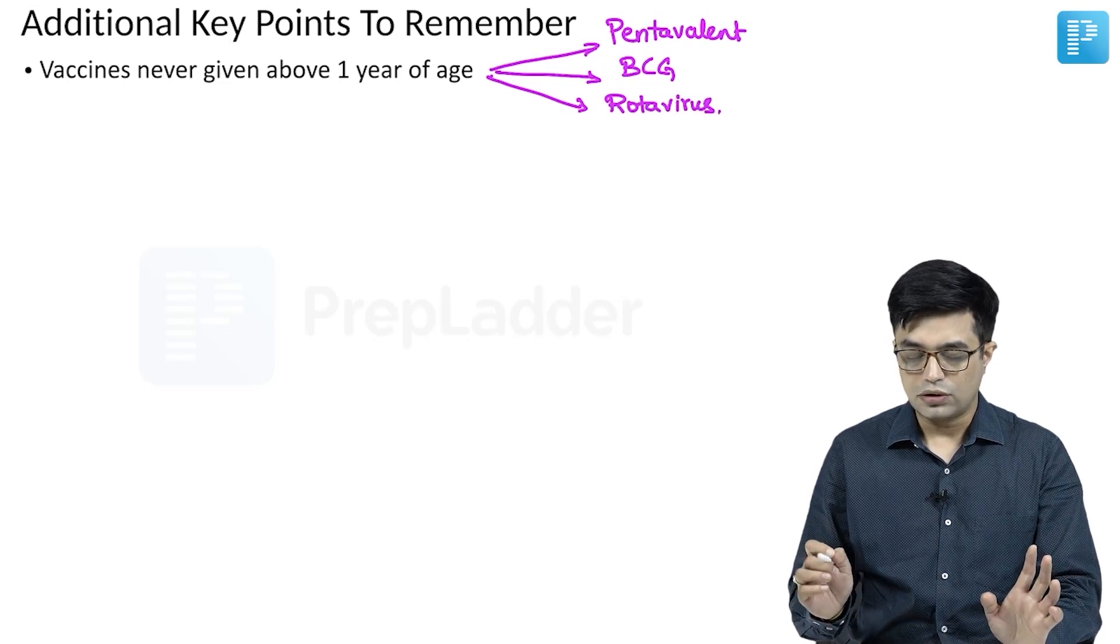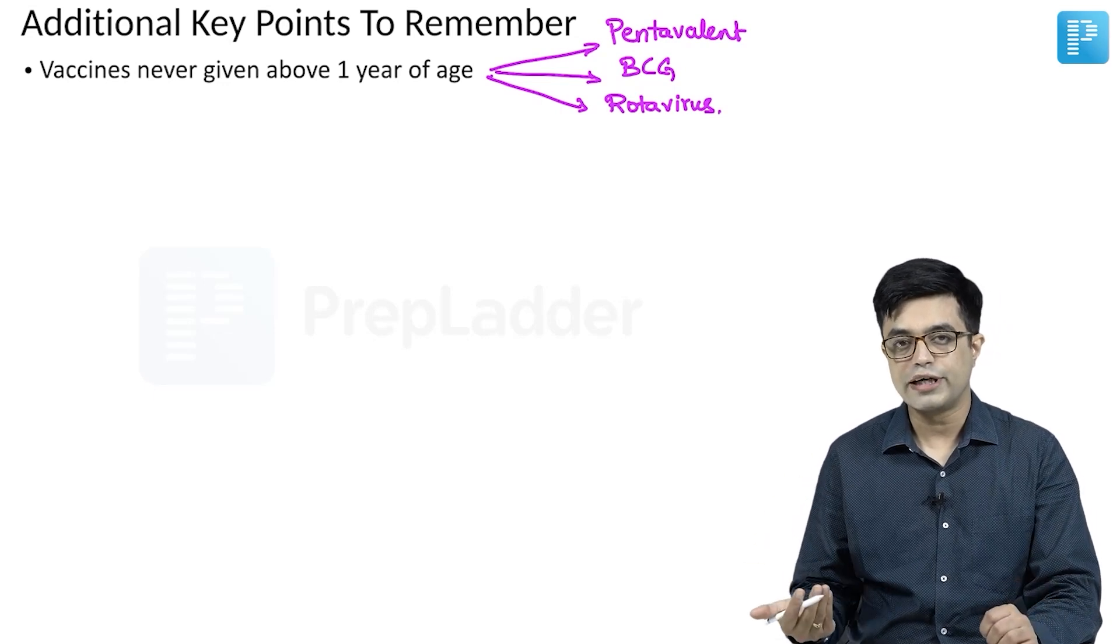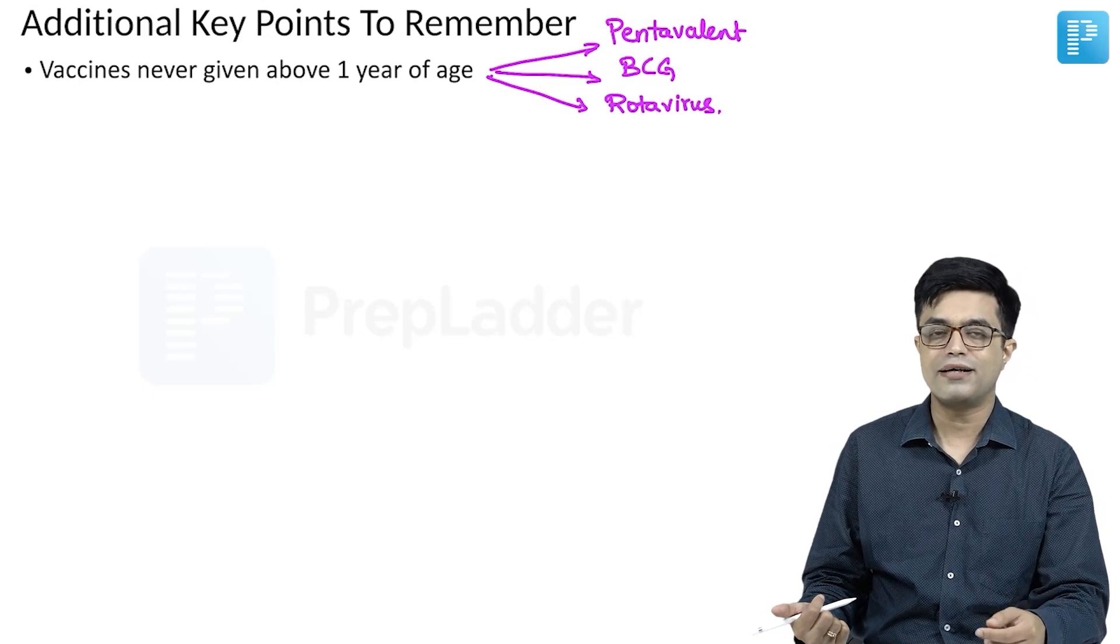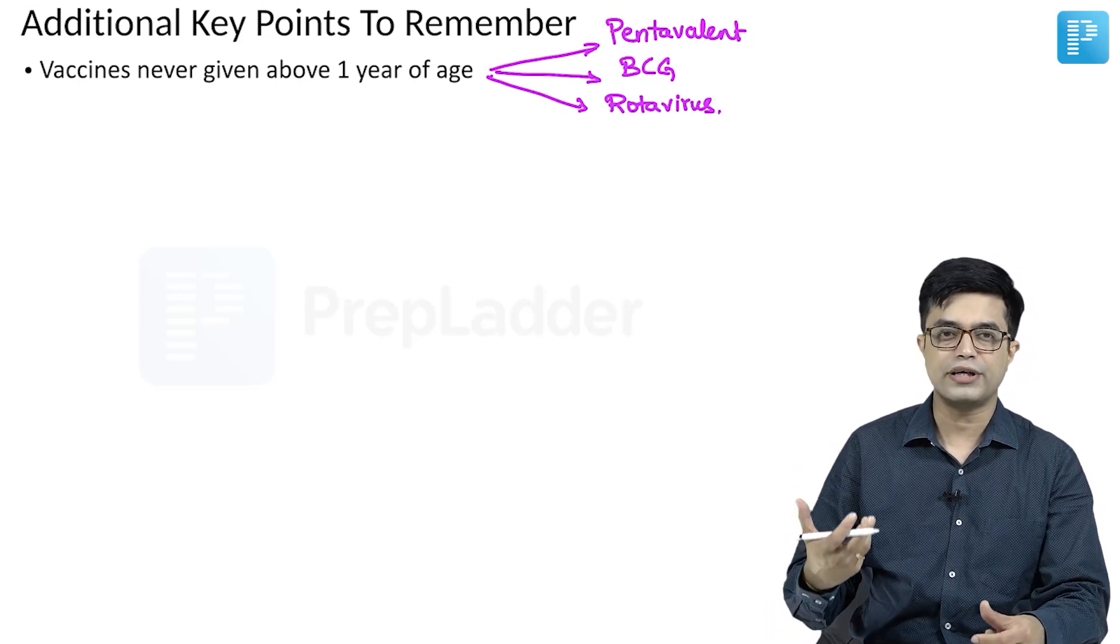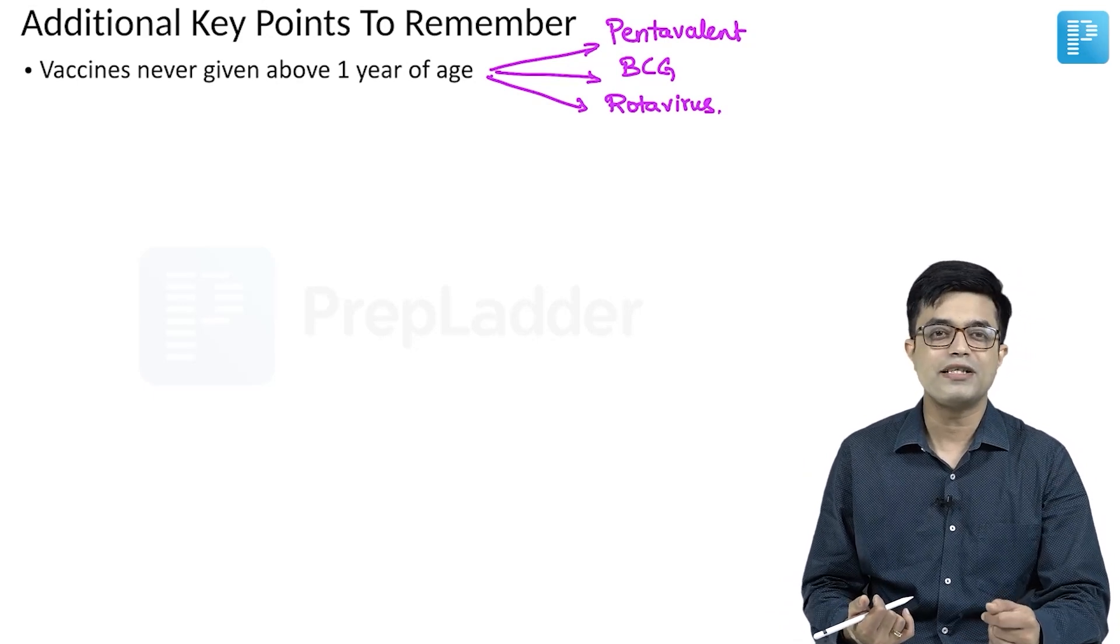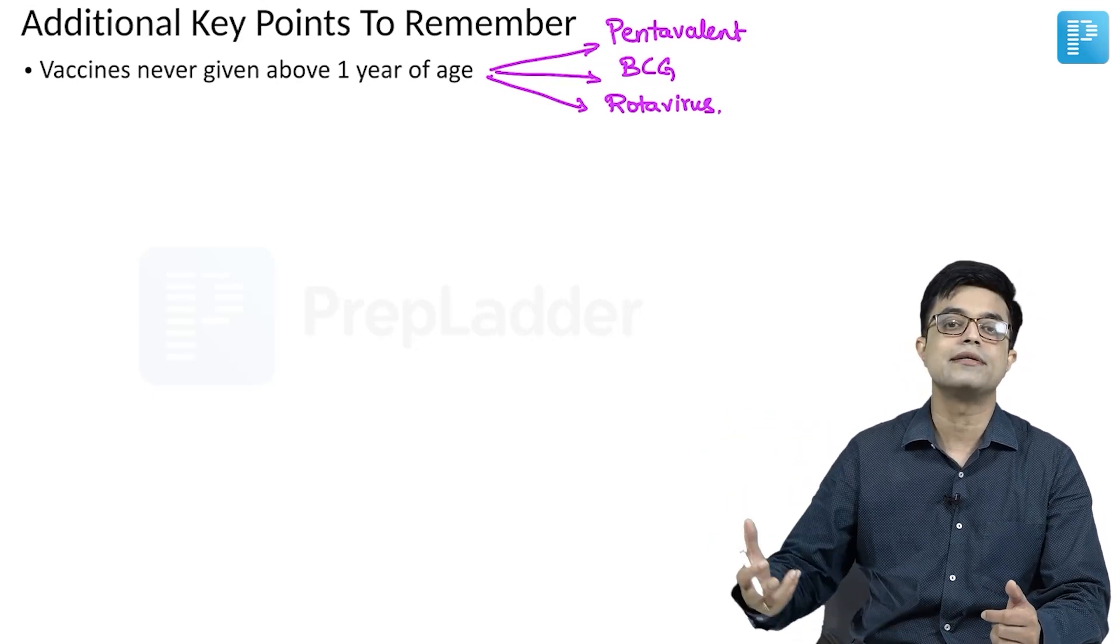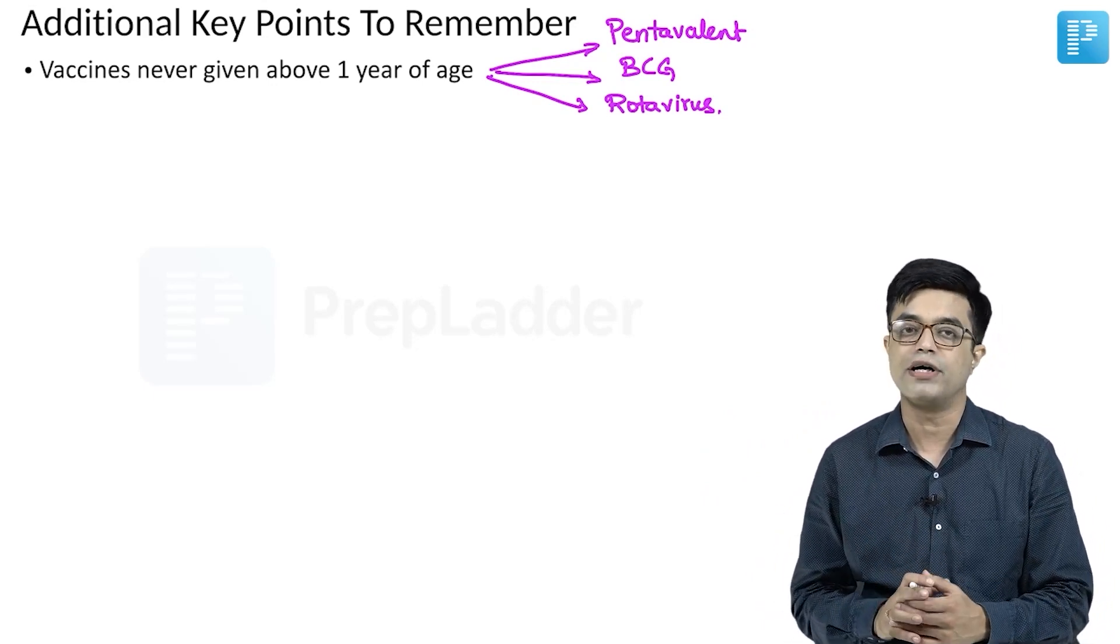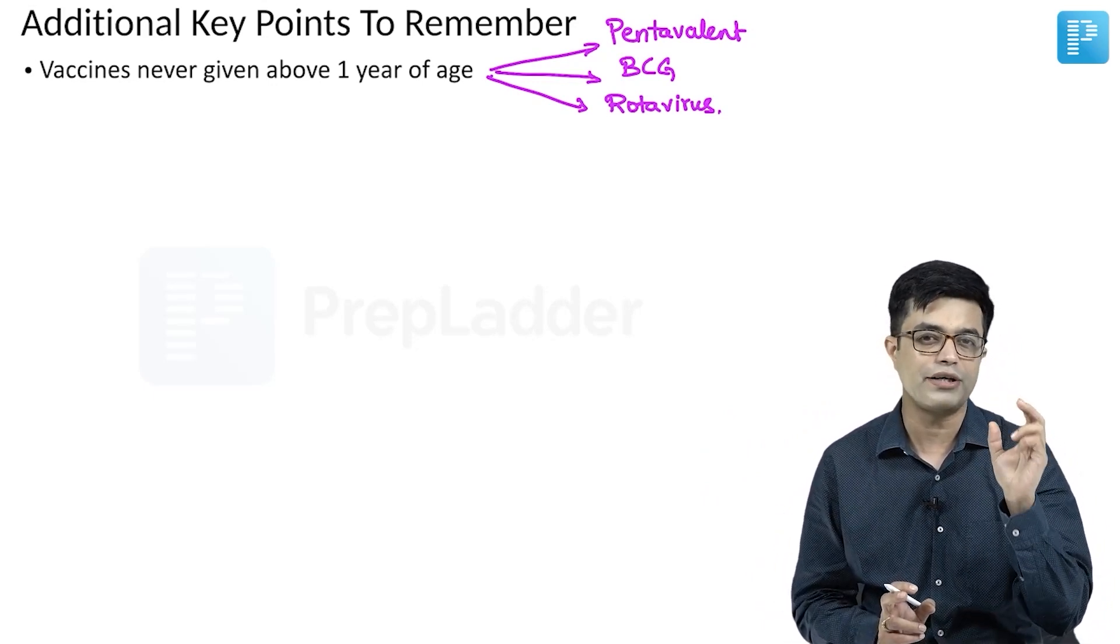Although hepatitis B also is not given if the dose has been skipped or missed. But in case of healthcare workers or in case there is exposure or any such kind of thing, hepatitis B is not included as a catch-up vaccine. But it is not contraindicated to be given above one year of age. This is a small point that you should know.